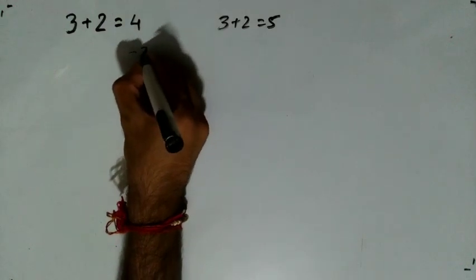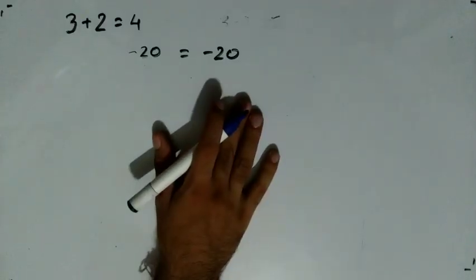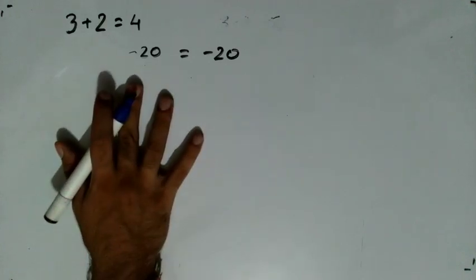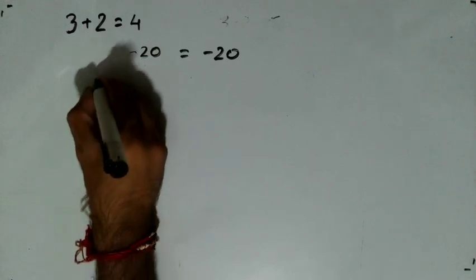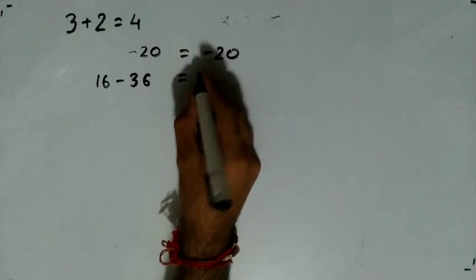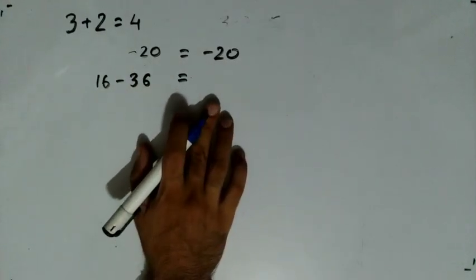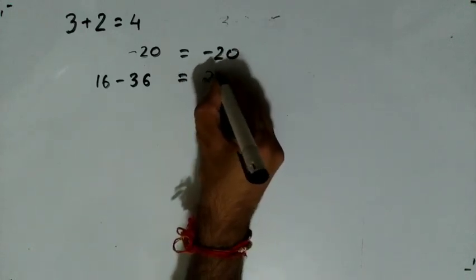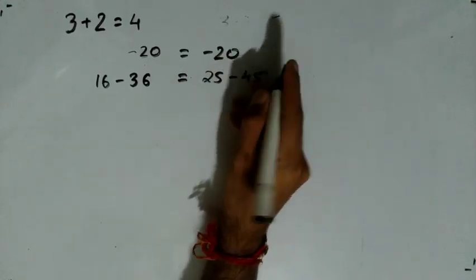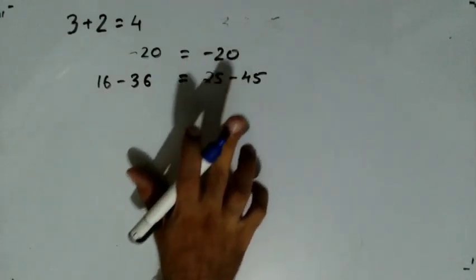Minus 20 is equal to minus 20. I will show you: minus 20 is equal to minus 20. It is logically possible that minus 20 is equal to minus 20. Minus 20 is equal to minus 16 minus 36. I will write 16 minus 36. Minus 20 is equal to minus 20; 16 minus 36 is equal to minus 20; 25 minus 45 is equal to minus 20.